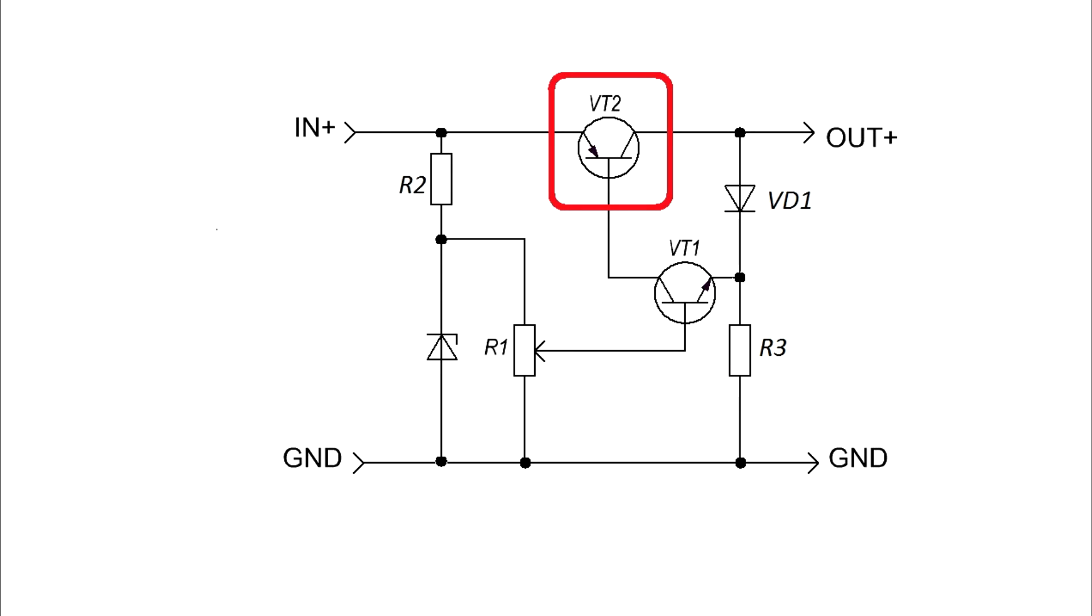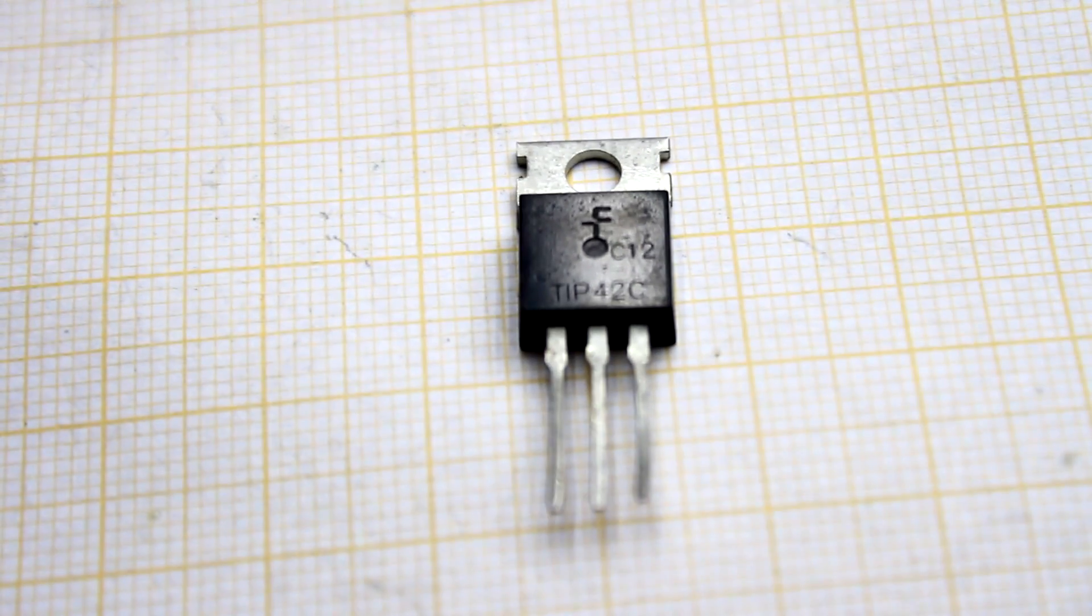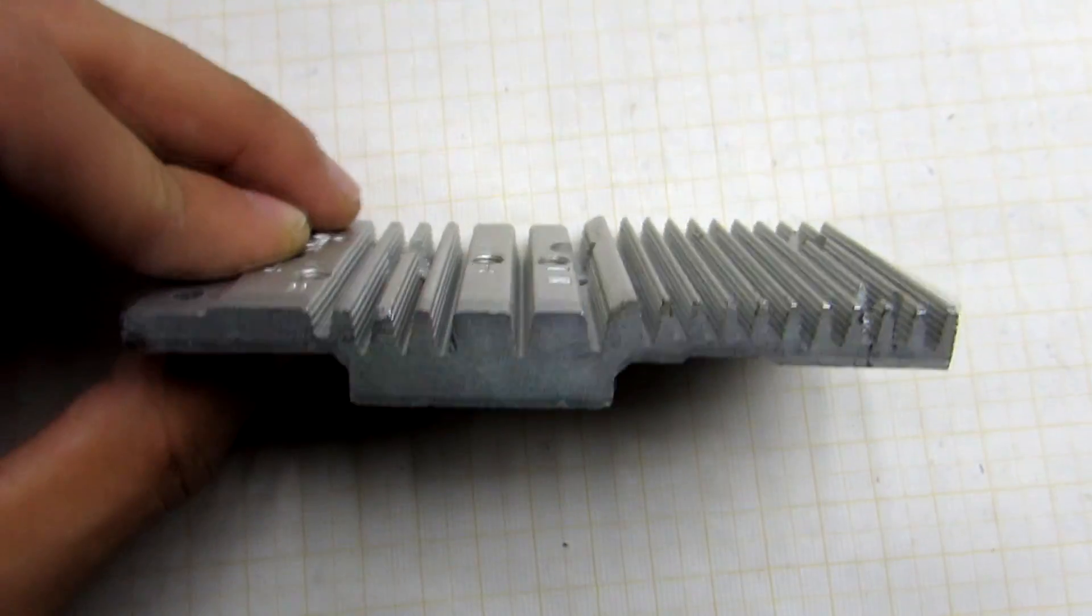The main current flows through the upper transistor, so at high current it will heat up, and therefore it needs a cooling radiator.